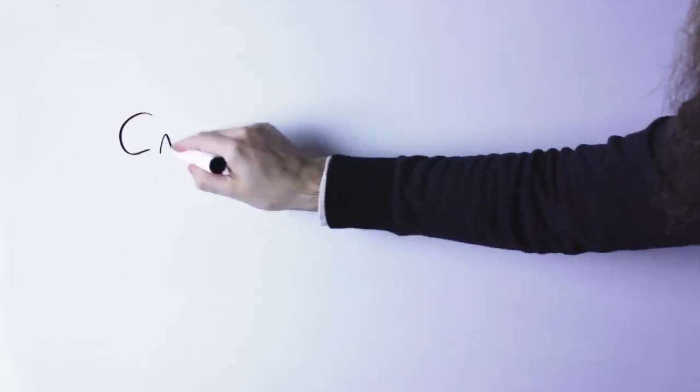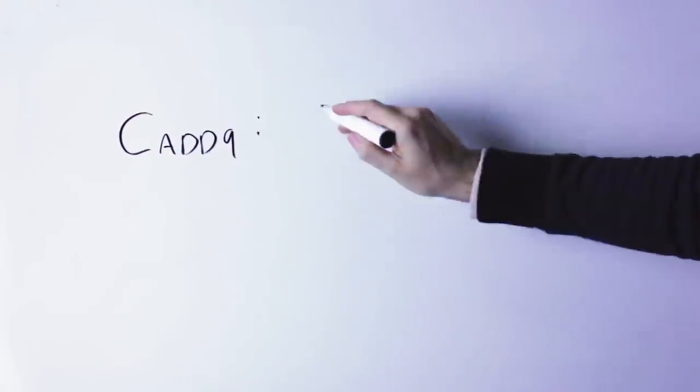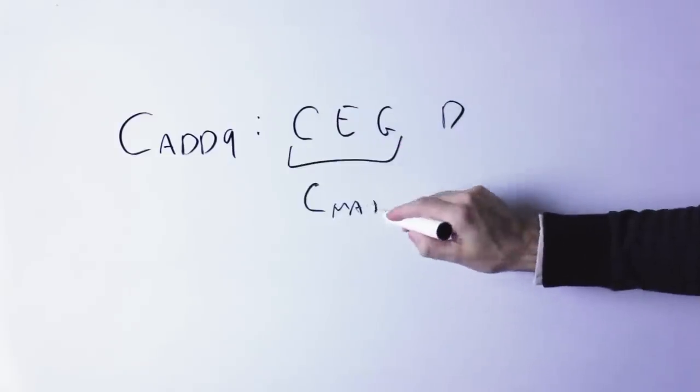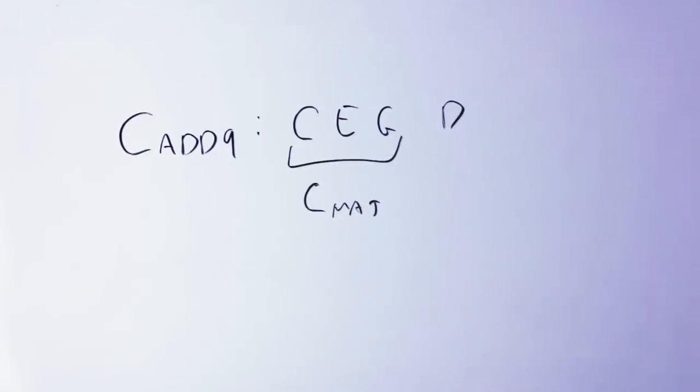If you have ADD, you put in the triad and only that note indicated, but not all the other odd numbers up to that. So, for instance, a C add 9, is C, E, G, C major, and then you add the 9, which is D, so the notes are C, E, G, D.